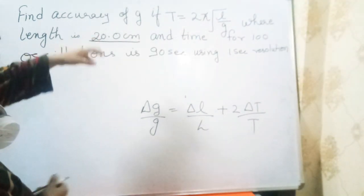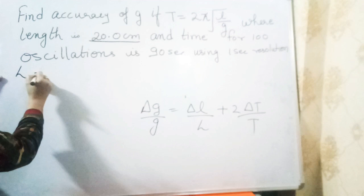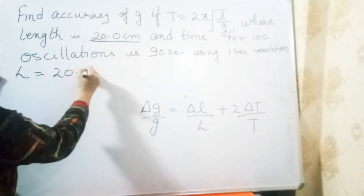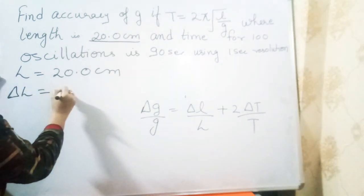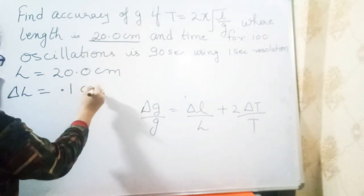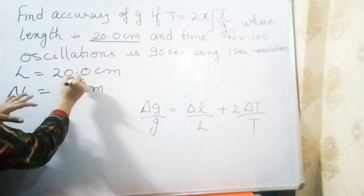Delta G over G equals delta L over L plus 2 delta T over T. As I told earlier, errors are always positive. Now I'm searching the values in the question. Length is 20.0, meaning delta L is 0.1 cm - we have one decimal place.